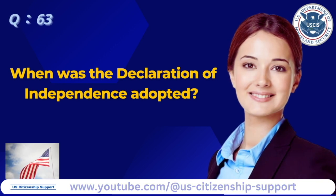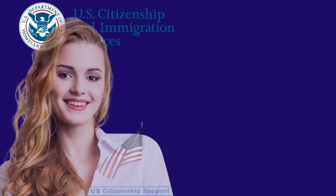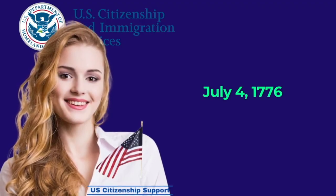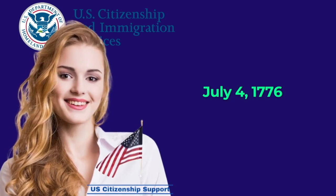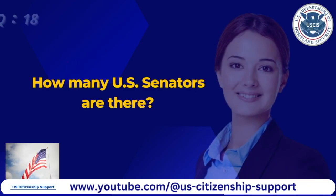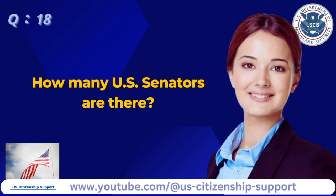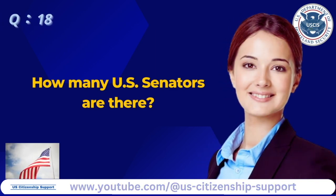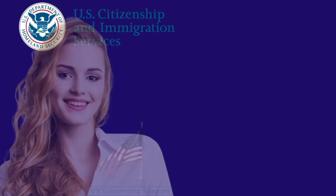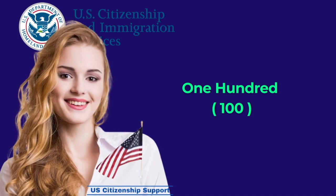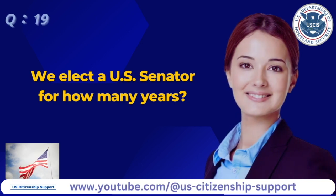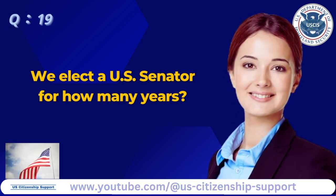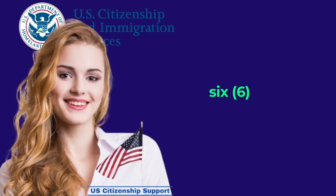When was the Declaration of Independence adopted? July 4th, 1776. How many U.S. Senators are there? One hundred. We elect a U.S. Senator for how many years? Six.